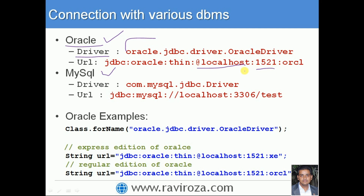Then there is an SID — System Identifier. The port number for Oracle is 1521 by default. To clarify: 1521 is the port number, and the SID is 'oracle'. So in the URL, you specify the host, then the port number 1521, then the SID.